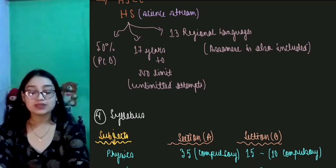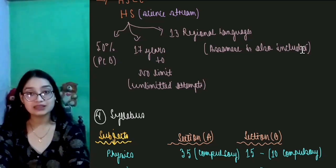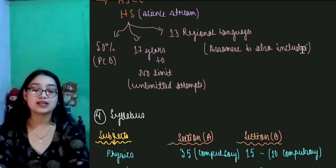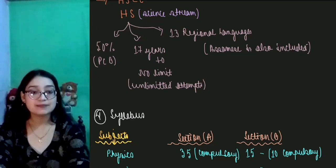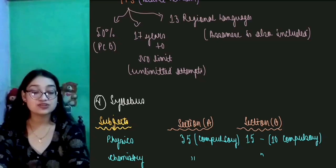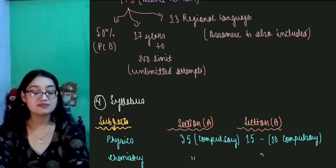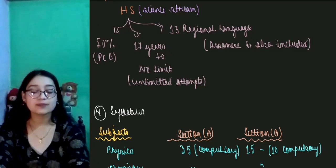If you have completed class 12 with PCB, you can appear. You need to get eligibility. There is a lower age limit — the minimum age is 17 years. There is no upper age limit as of now. Students who don't meet these criteria are not eligible. Language is not a barrier; students can use the language they are comfortable with as much as possible.